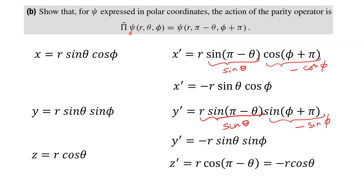Naturally both representations are equivalent: if the parity operator acts on psi as a function of R, theta, phi, it becomes equivalent to psi evaluated at R, pi minus theta, phi plus pi. So we have proved both parts. Then we will move on to section C.